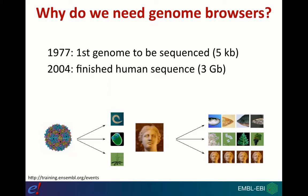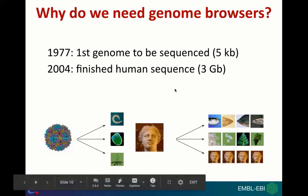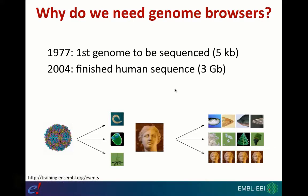There are also projects that look at sequencing many different individuals within a single species. The 1000 Genomes Project is a good example — completed in 2014, over two and a half thousand people in different populations around the world had their genome sequenced, aiming to identify common variants in different populations. Ensembl tries to represent all of this genomic data being produced by different projects and collaborations worldwide.